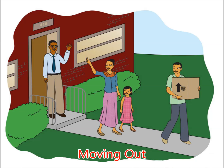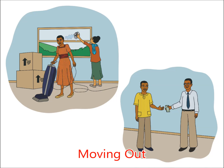Moving out. It is important to complete your lease. Most leases ask that you agree to live in the apartment or house for 12 months. Give your landlord a month's notice in writing before moving out. At the end of the lease, the landlord will return the security deposit only if the apartment is in good condition and if the rental payments are current.